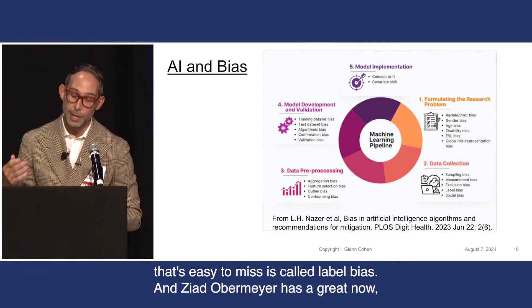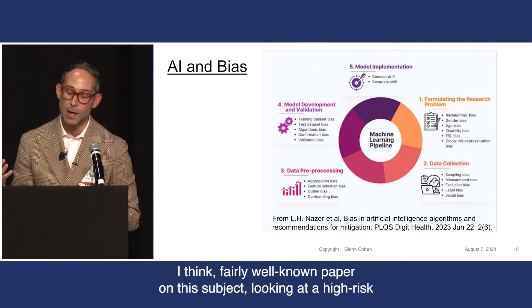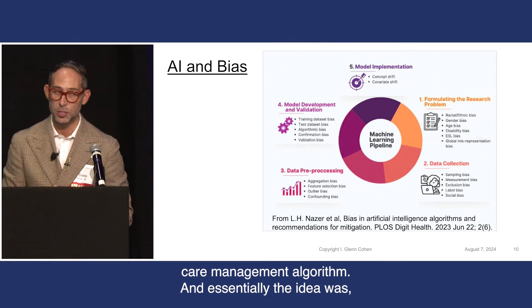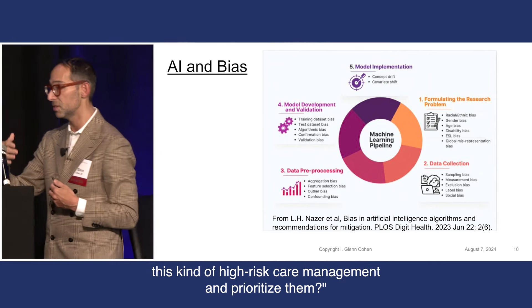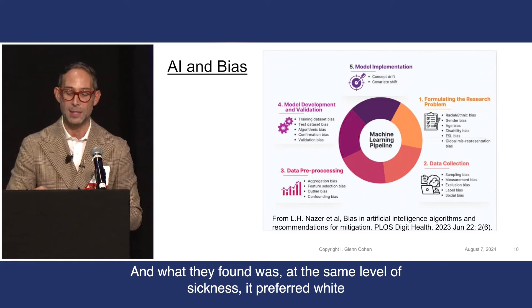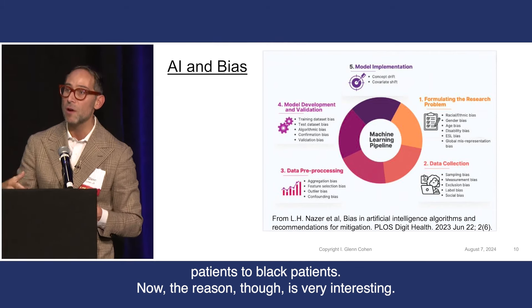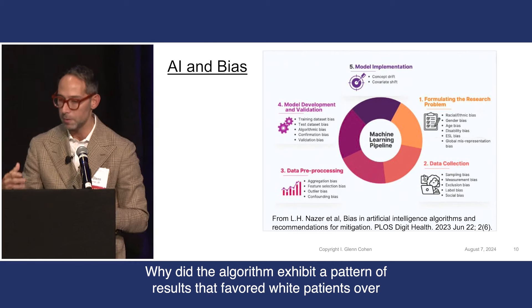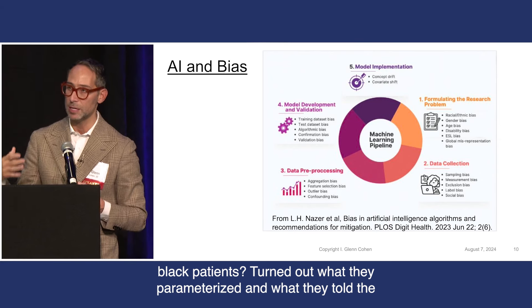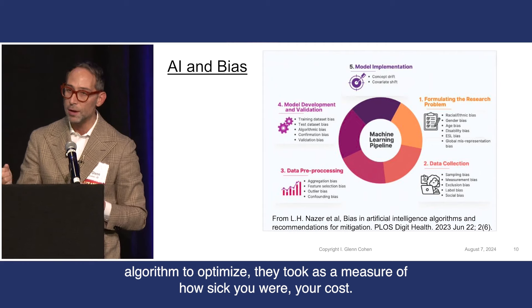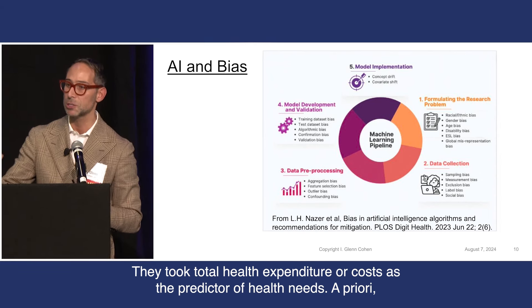A different example that's easy to miss is called label bias, and Ziad Obermeyer has a now fairly well-known paper on this subject, looking at a high-risk care management algorithm. The idea was: can we target the patients who would benefit the most from this kind of high-risk care management and prioritize them? What they found was, at the same level of sickness, it preferred white patients to black patients. The reason is very interesting — why did the algorithm exhibit a pattern of results that favored white patients over black patients? It turned out what they parameterized, what they told the algorithm to optimize, was cost.